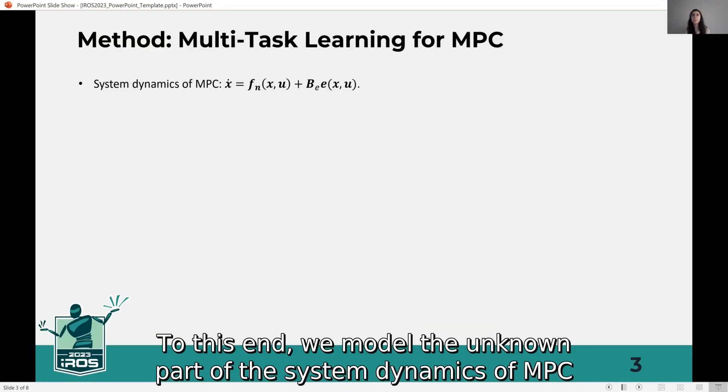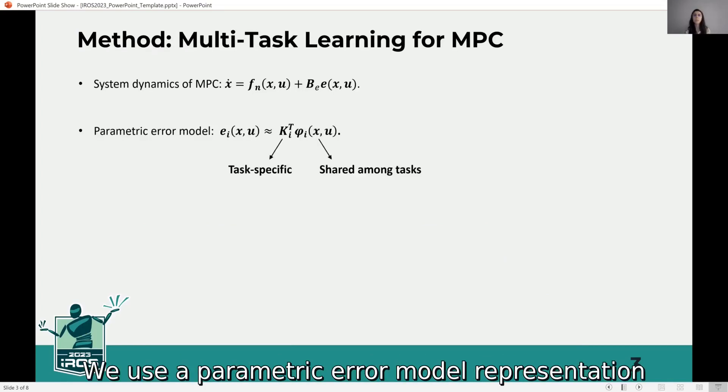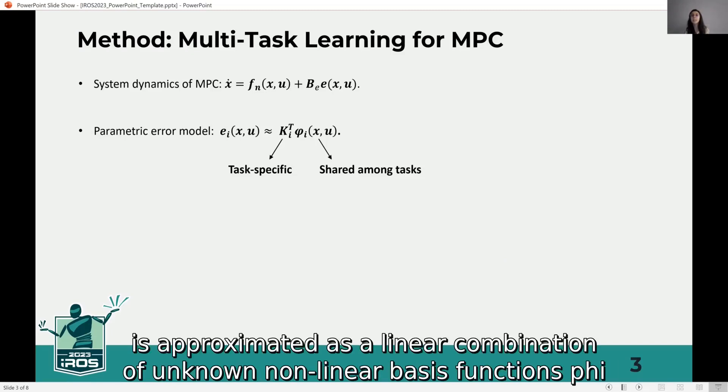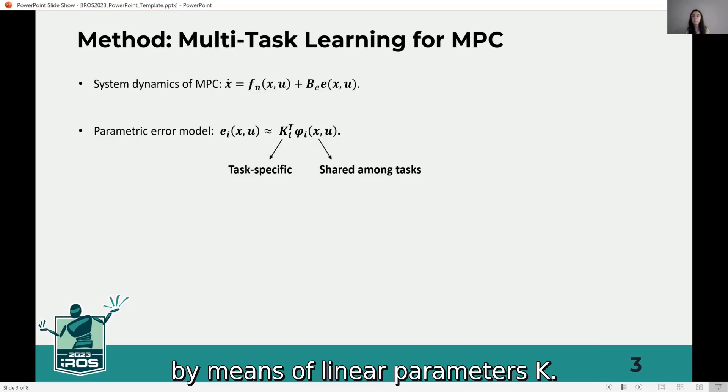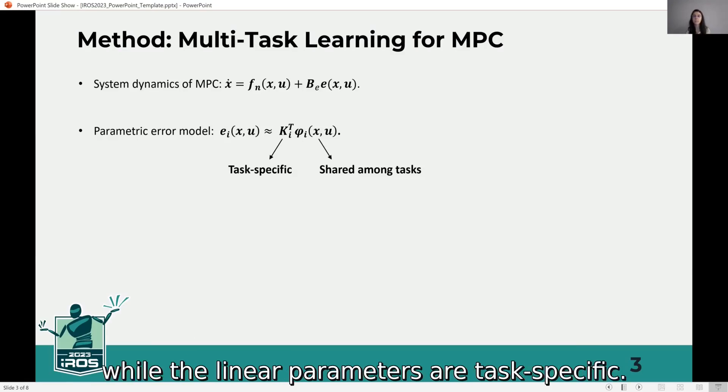To this end, we model the unknown part of the system dynamics of MPC using an additive error E. We use a parametric error model representation where each component of the additive error E is approximated as a linear combination of non-linear basis functions fit by means of linear parameters. We assume that the basis functions are shared among a set of tasks while the linear parameters are task-specific.